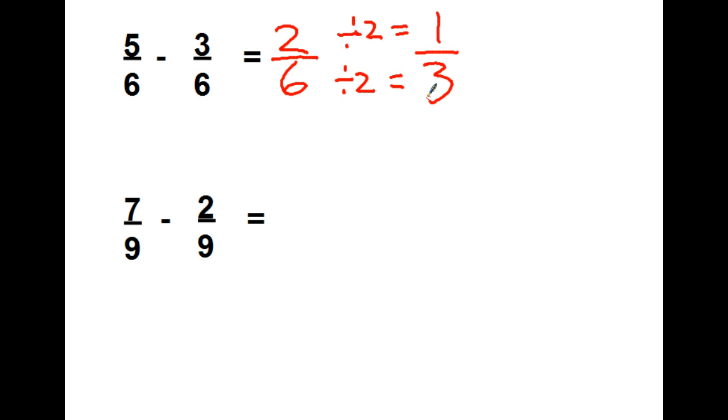7 ninths minus 2 ninths, top minus top. Denominator doesn't change, 5 ninths. Can I simplify? Nope, finished with that one.